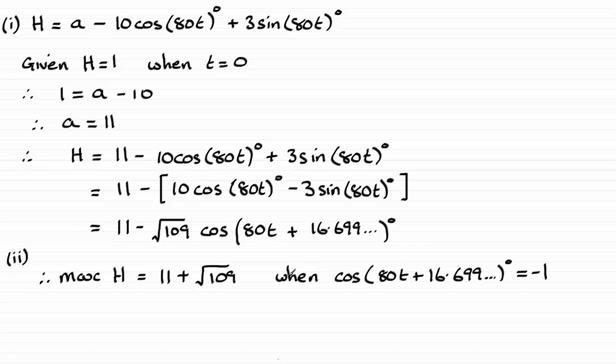So you can work this out, the root of 109 plus 11, and you get h to be this value here, 21.440 and so on, which is 21.44 meters to two decimal places.